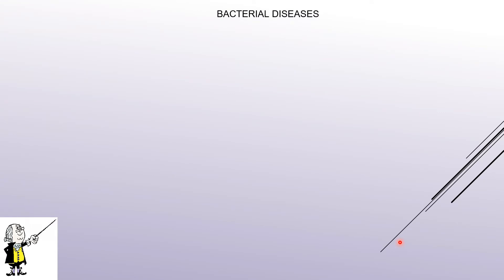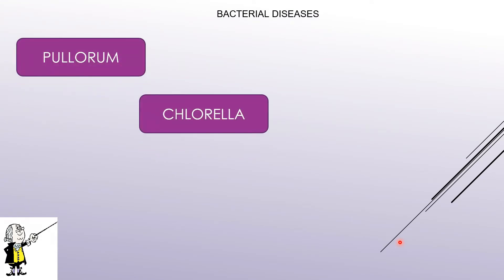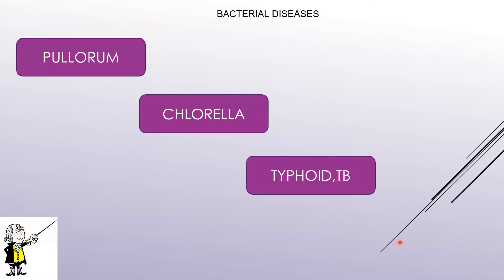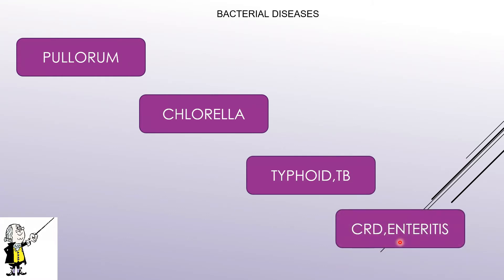Bacterial diseases consist of pullorum, cholera, typhoid, TB (tuberculosis), CRD (chronic respiratory disorder), and enteritis — inflammation of the enteron, that is, the intestine.